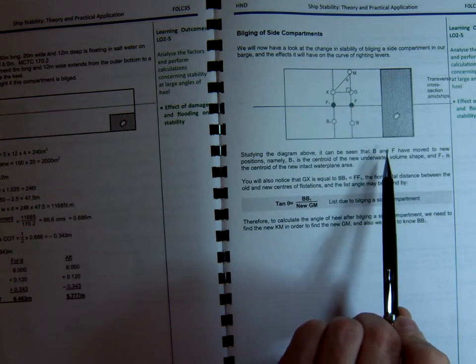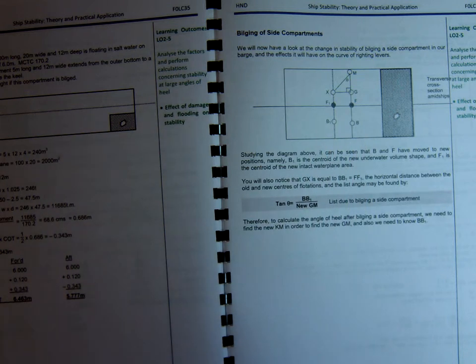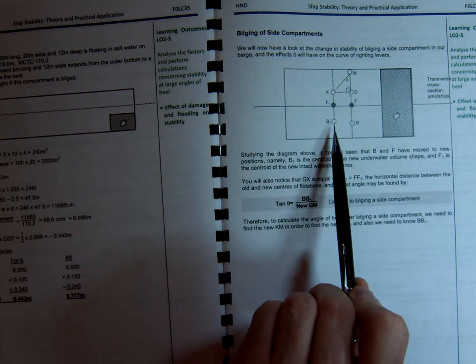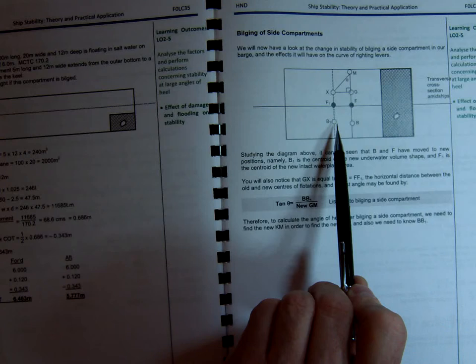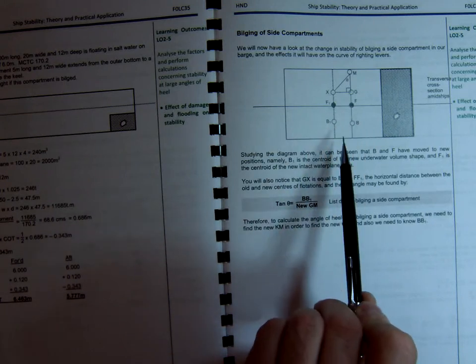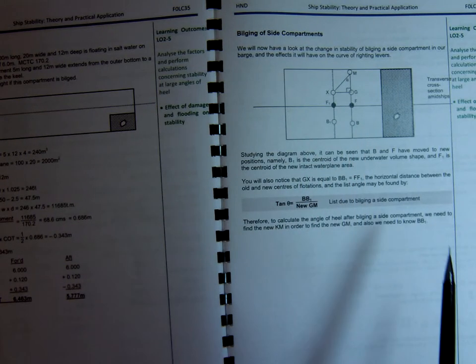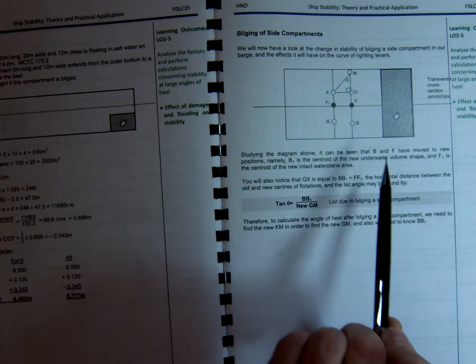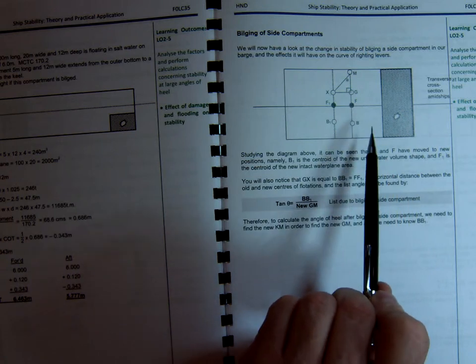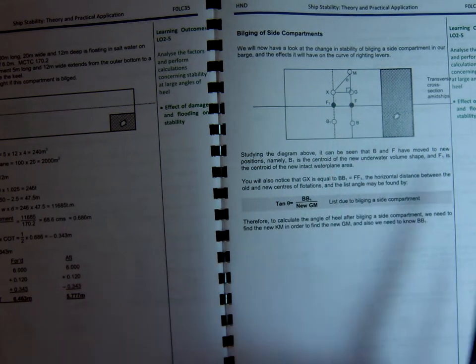have moved to new positions. B has moved to B1, the centroid of the new underwater volume. And F1 is the centroid of the intact new water plane area, because this has been bilged.